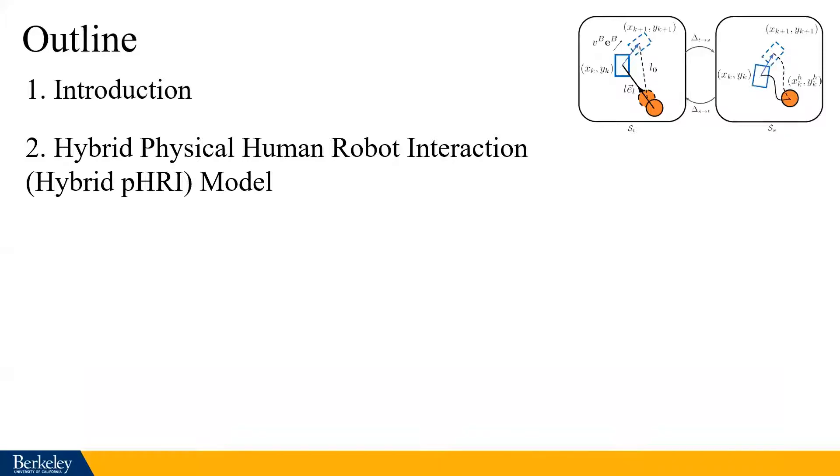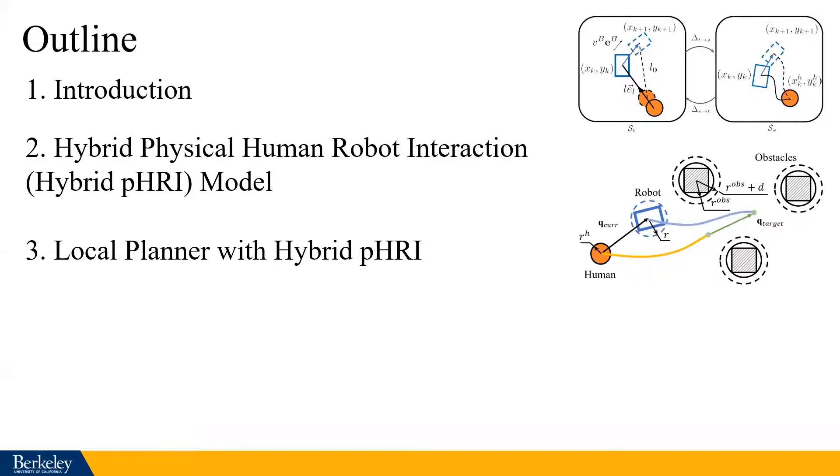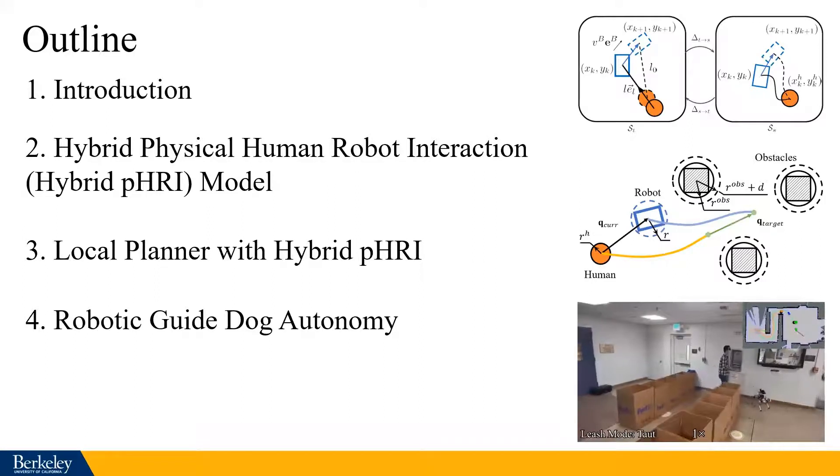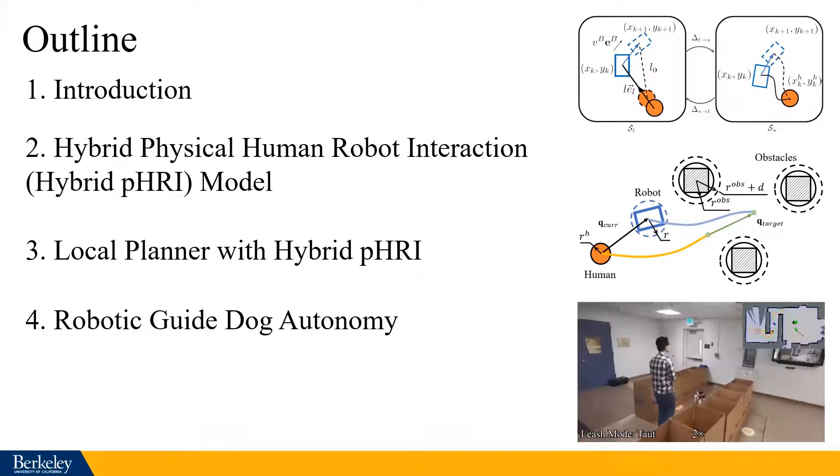Here is the outline of the talk today. We firstly develop and validate a hybrid model to describe the dynamics between the human and the robot while using a guide leash which could be either slack or taut. I think this is one of the first hybrid physical human-robot interaction models in this scenario. This hybrid model is then utilized in an optimization-based local planner to enable the robot to lead human while avoiding obstacles. And in the last part, we build up one of the first end-to-end robotic guide autonomy using the quadrupedal robot to lead blindfolded persons to safely navigate through narrow spaces.